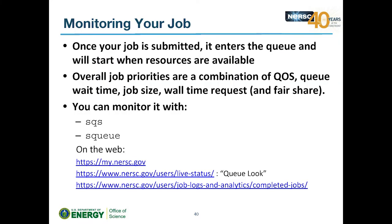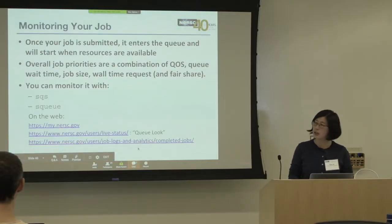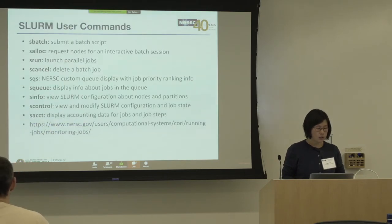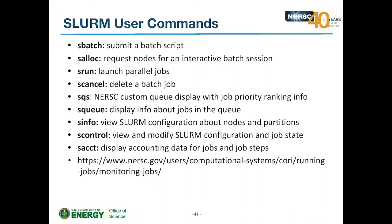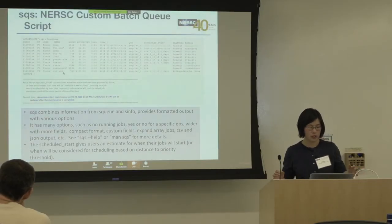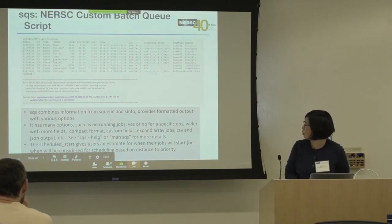To monitor your jobs, use SQS (NERSC's custom wrapper for squeue) or squeue directly. SQS provides formatted output with many options: show only my jobs, exclude running jobs, show shared jobs only, wider format with more fields, and so on. Use the man page or --help to find all options. SQS also shows the 'scheduled start' time — when the scheduler has already set aside resources for your job — which squeue alone doesn't provide.